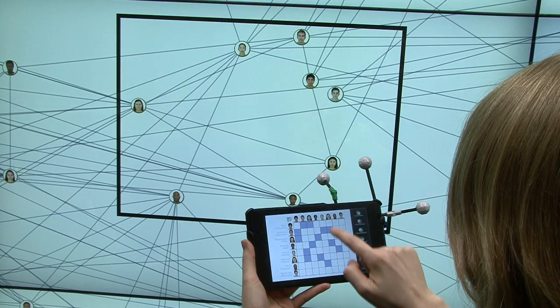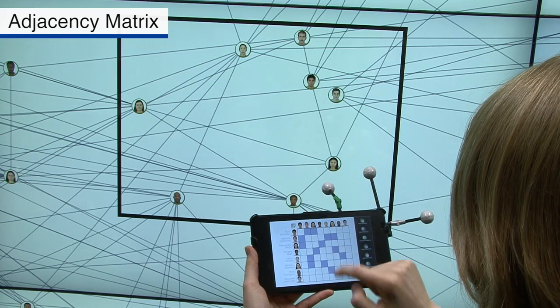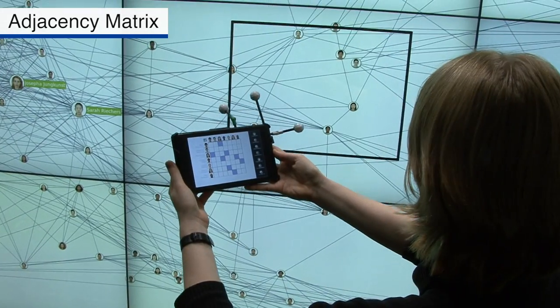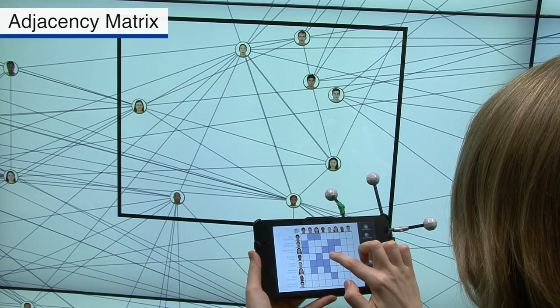Adjacency matrix. By providing the mobile device as an additional output display, we contribute the coupled, movable, alternative visual representation of the data as a matrix.